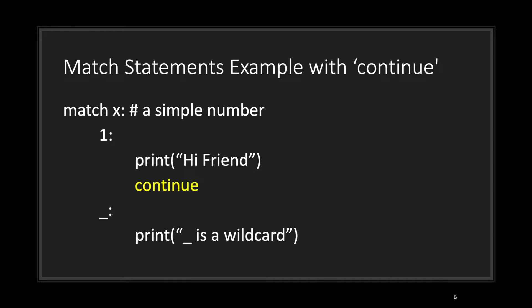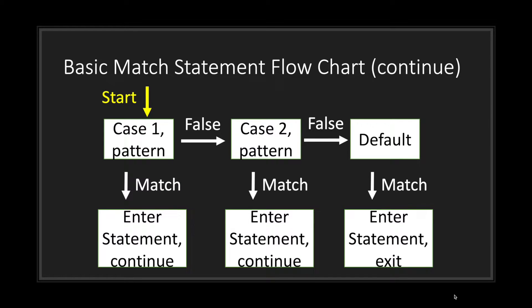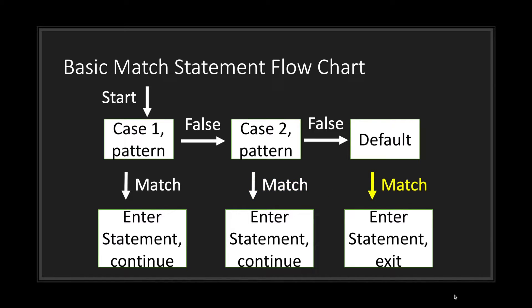Now let's look at an example with the continue keyword. All you have to do is type continue at the bottom of your match statement block. What this means is that even if your value matches a pattern, continue checking other patterns after it. We take a value, check if it matches a pattern, enter the block, execute the code, and then move on to the next pattern. If you have a default underscore block, since it's a wildcard, you'll enter that statement and exit.